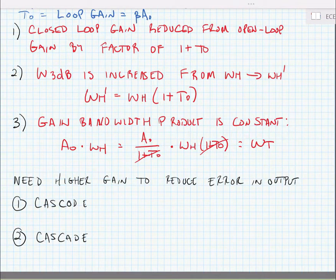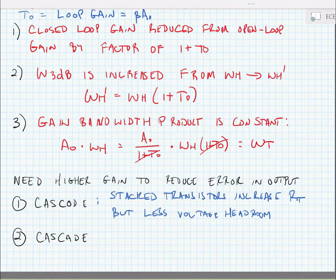We have a couple of different methods to do this. One is using the cascode where we stack transistors, and another is the cascade multiple amplifiers. When we cascode, we stack transistors to increase the total resistance that the GM cell drives, and this increases the voltage gain. But because of the stacked transistors, we have less voltage headroom. In other words, we have less voltage range that the op amp will work over.